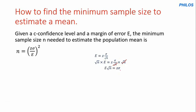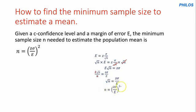We want to make n the subject, so we must eliminate everything else affecting n. Since e is the coefficient of root n, we divide both sides by e. This cancels e on the left, giving us root n equals z times standard deviation divided by e. To eliminate the square root, we square both sides — the square cancels the square root — giving us n equals z times standard deviation over e, all squared. That's where we derive this formula from.